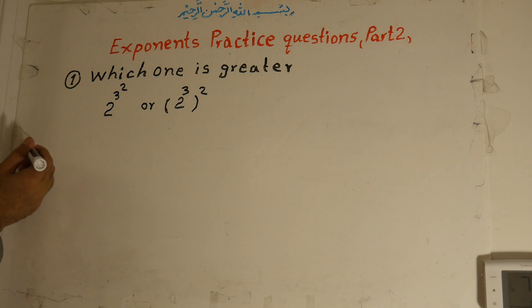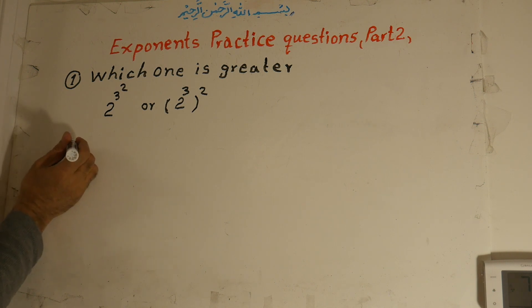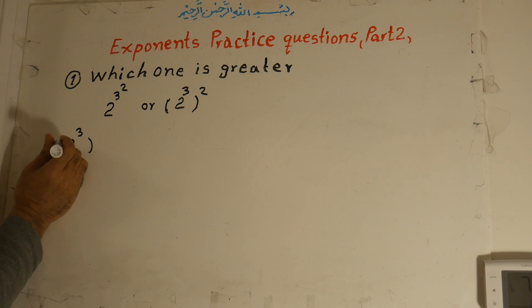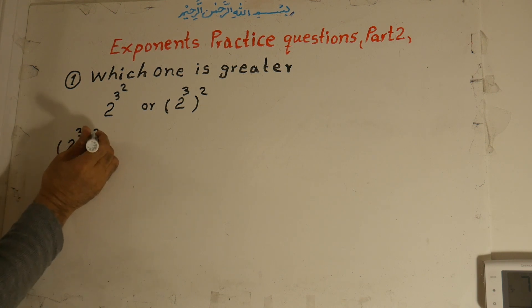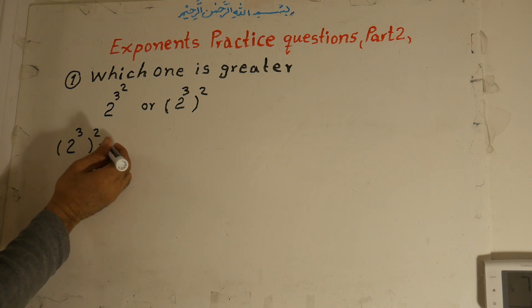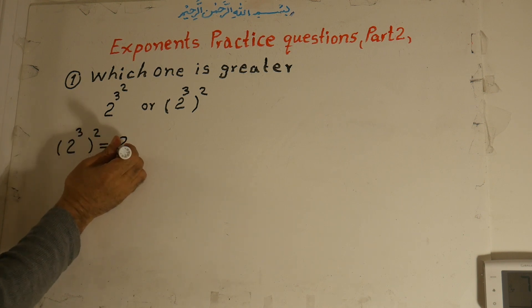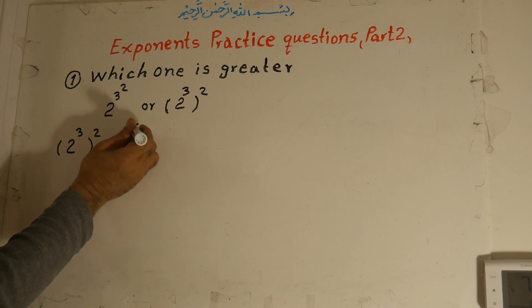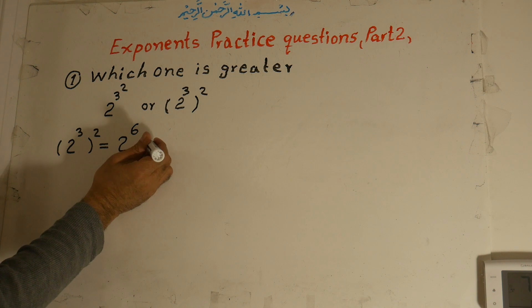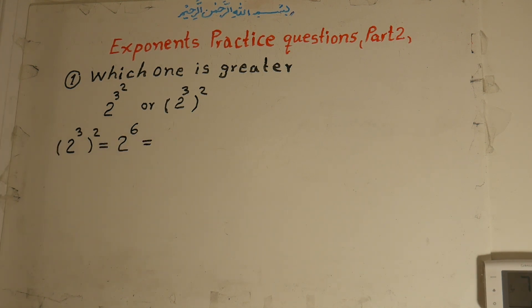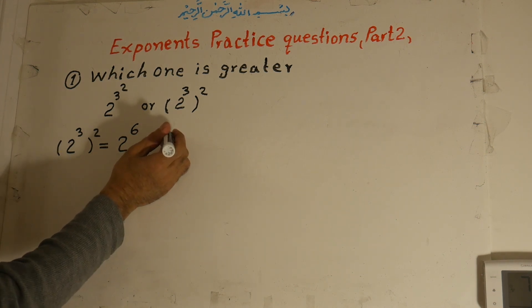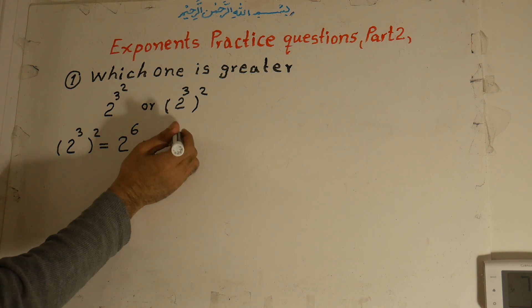So now we know that two to the power of three, all to the power of two — from previous lessons we know that we multiply these powers to each other, and it becomes two to the power of two times three, which is six. And two to the power of six means two times two times two, six times: two, four, eight, sixteen, thirty-two, sixty-four. Two to the power of six is equal to sixty-four.